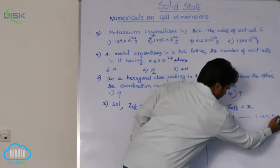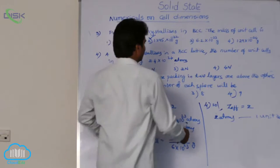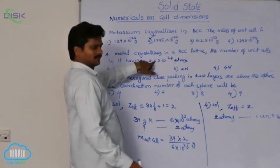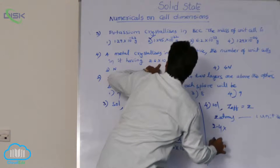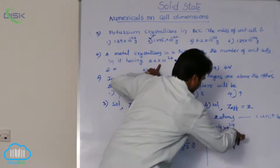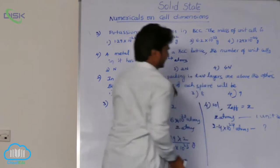If 2 atoms form 1 unit cell, then how many atoms we have? 2.4 into 10 power 24 atoms we have. So these atoms now form how many unit cells, that is the question.